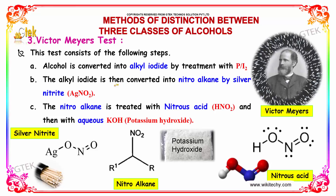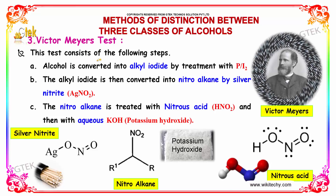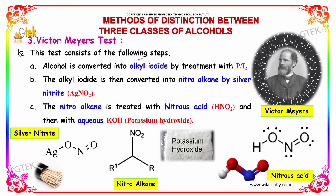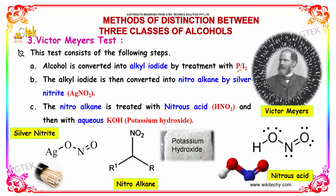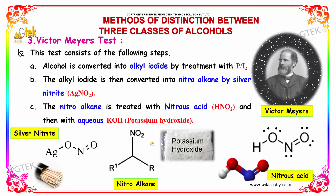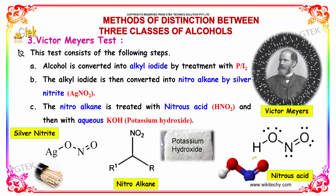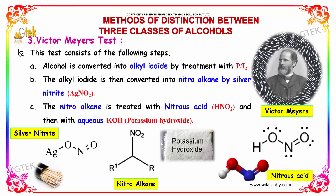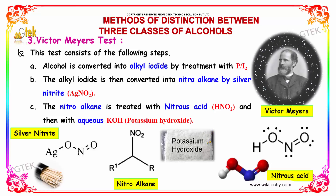The third important distinction test is Victor Meyer's test. This test consists of the following steps. Alcohol is first converted into alkyl iodide by treatment with PI3. The alkyl iodide is then converted into nitroalkane by silver nitrate, i.e. AgNO2, where there is a double bond between the nitrogen and the oxygen atom. The nitroalkane is then treated with nitrous acid (HNO2) and then with aqueous KOH.